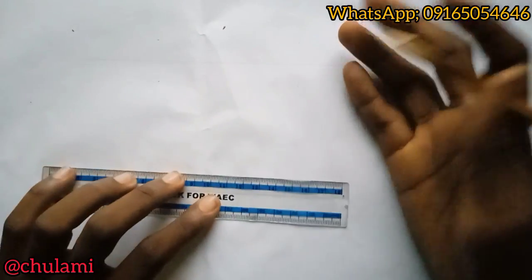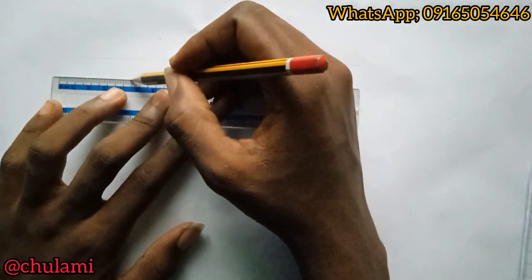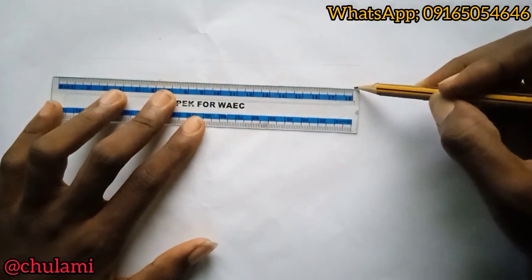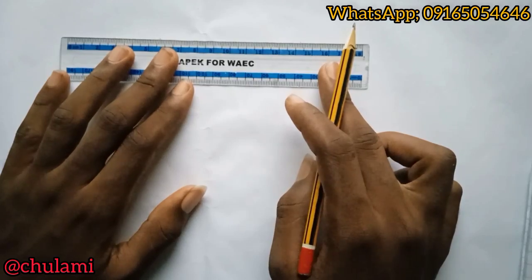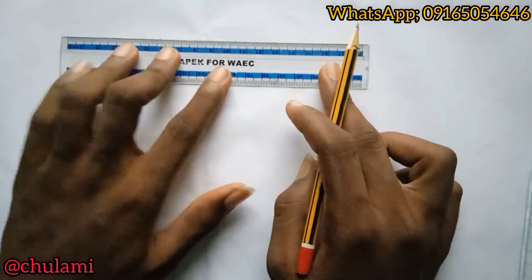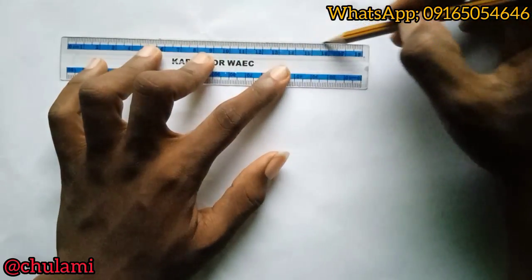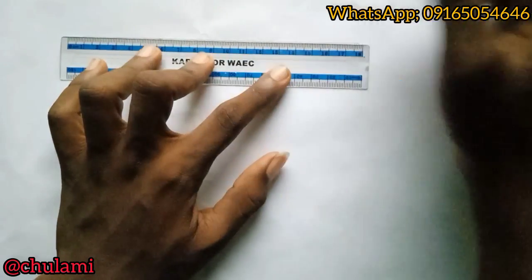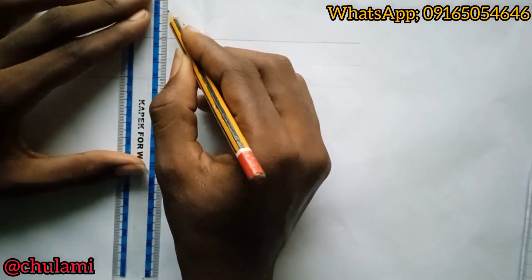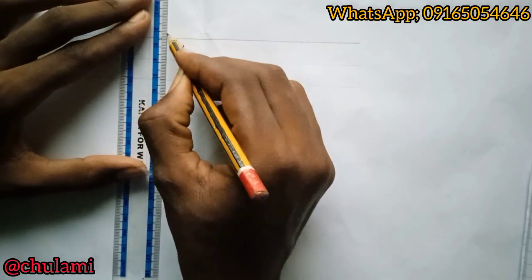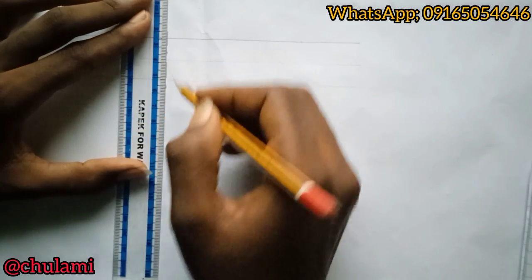Once we're done with that, we join those two points together. Join them up and down. Make sure this line is faint; mine is thicker because I'm making a tutorial video.